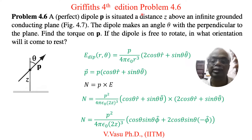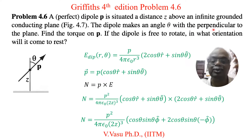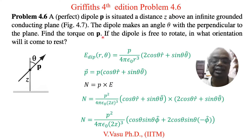Today we will solve problem 4.6 of Griffiths 4th edition, Introduction to Electrodynamics. The problem states: a perfect dipole P is situated at distance Z above an infinite grounded conducting plane. The dipole makes an angle theta with the perpendicular to the plane. Find the torque on P, and if the dipole is free to rotate, in what orientation will it come to rest?